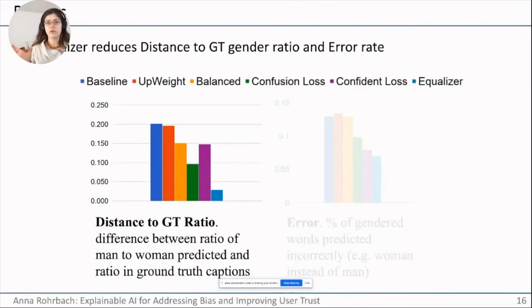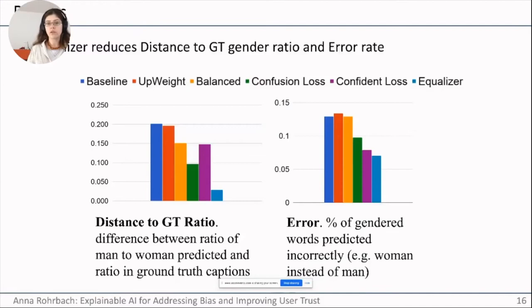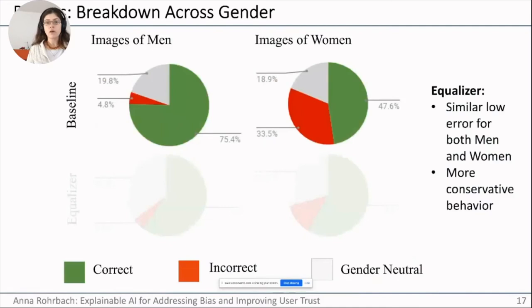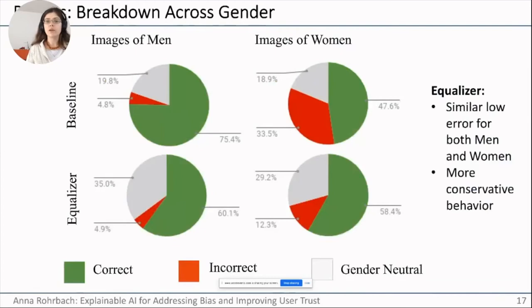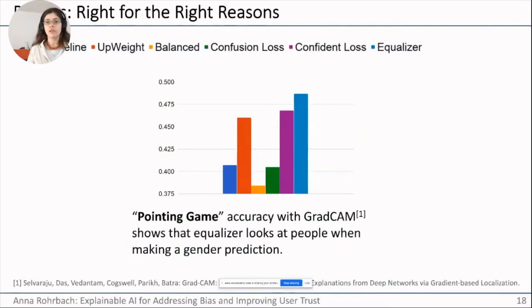We evaluate the distance to the ground truth ratio of predicting men and women labels, and our model achieves the lowest distance — it most closely follows the true distribution. We also look at the misclassification error rate, and our full model achieves the smallest error rate. Importantly, since men are the majority class and women the minority class, overall accuracy alone can be misleading. Our model achieves much more similar outcomes for men and women, with more balanced correctness and incorrectness rates than the original baseline.